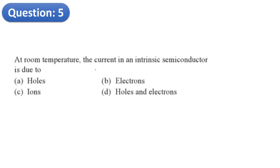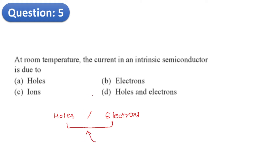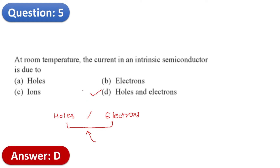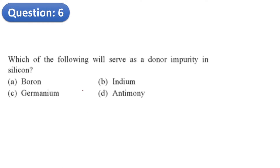Question 5: At room temperature, the current in a semiconductor is due to what? For an intrinsic type semiconductor at room temperature, both holes and electrons are available. Therefore the current is due to both holes and electrons. Option D is the correct answer.